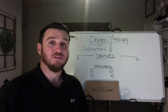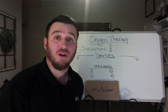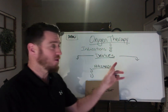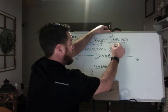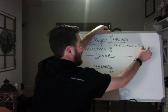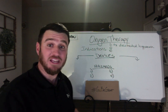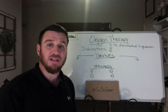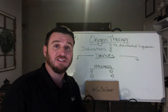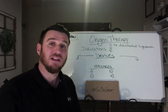It basically breaks down like this. When you talk about oxygen therapy, the question is: what's the indication for implementing oxygen therapy? And there's only three of them. The first one is to treat documented hypoxemia — a patient that presents with documented hypoxemia. What do you mean by documented? Either you have a blood gas that reveals an arterial oxygenation level less than 80 mmHg, or you have an oxygen saturation less than 90%. That's documented hypoxemia.